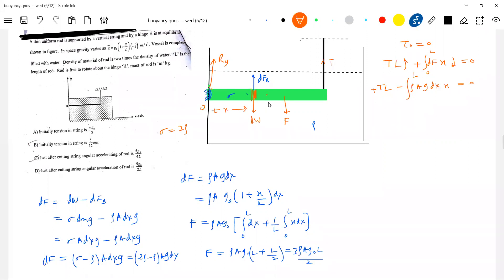Next step. It will be df into L. Rho Ag is what? g knot. g now g dot 1 plus x by L, 0 to L is equal to Rho A g0, 1 by L, x square dx, 0 to L. L square by 2, L square by 3. Rho A g naught L square by 6. Finally, tension is equal to how much? Rho A G naught L by 6.